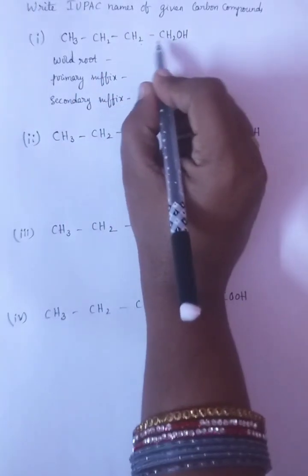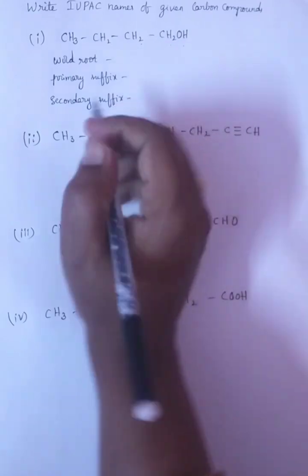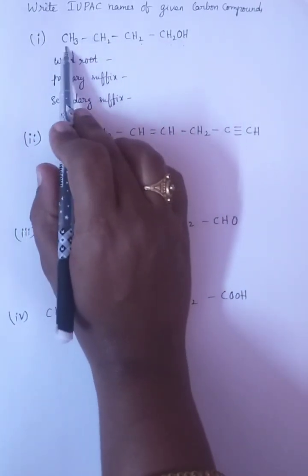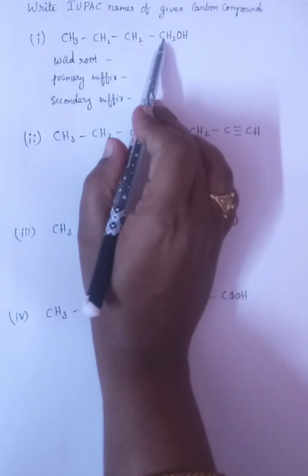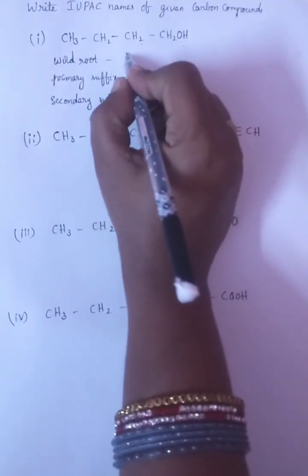CH3-CH2-CH2-CH2-OH. Let us try to write. First we want to count the number of carbons: 1, 2, 3, 4. Four carbons is nothing but but.